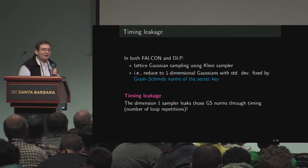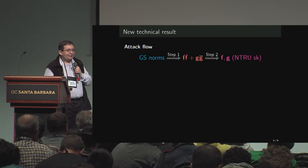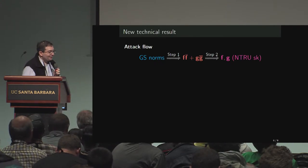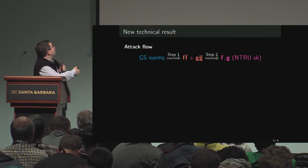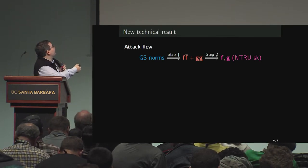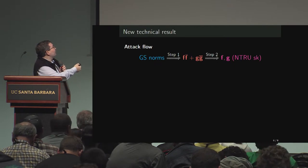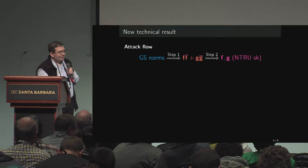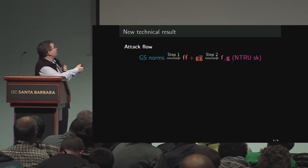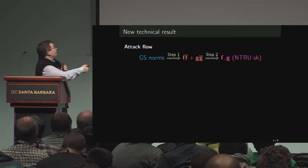Specifically, the number of repetitions carried out for your one-dimensional discrete Gaussian samplings leaks the GS norms. So there's an attack: you start from the Gram-Schmidt norms, and there's some interesting math to get back to a polynomial we call the Gram-Schmidt polynomial.